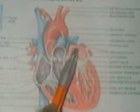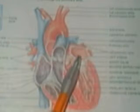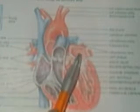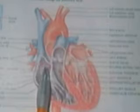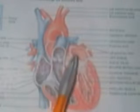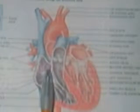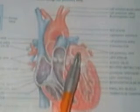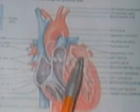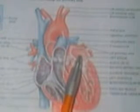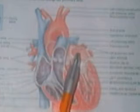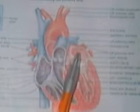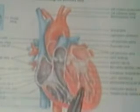This is the left atrium right here, and it contracts along with the right atrium. Both atria contract together, and both ventricles contract together. They don't contract at the same time as each other because that would be counterproductive. So the left atrium contracts and pushes the blood into the left ventricle.